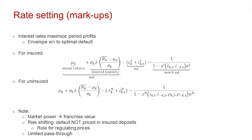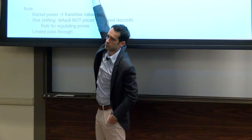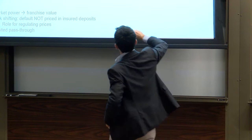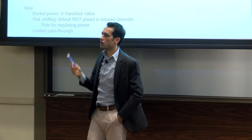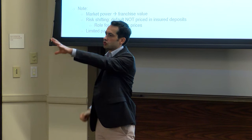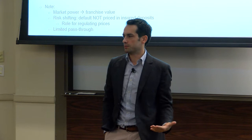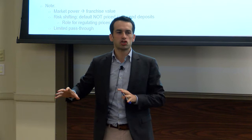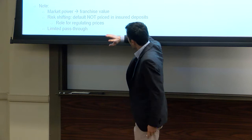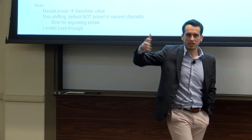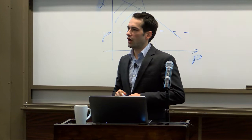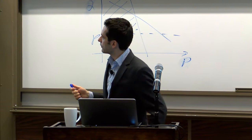So first you get limited pass-through through markups; second, you get risk shifting; third, because of competition, risk shifting spills over to competitors. If a failing bank starts charging higher interest rates on insured deposits, my healthy bank loses deposits because I'm competing with that bank, which makes me less stable. Instability spills over even though the two banks have no relationship in interbank markets. This puts in a role for regulating prices — interest rates — which you had back in the day, and actually had during the crisis when Ally Bank started jacking up interest rates and was told to stop.